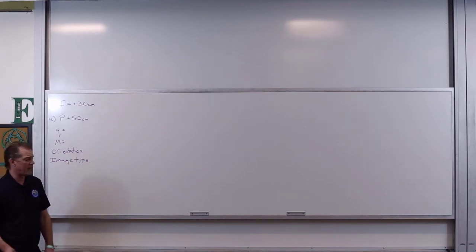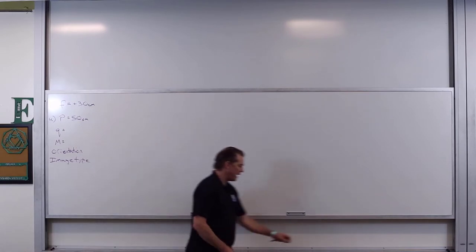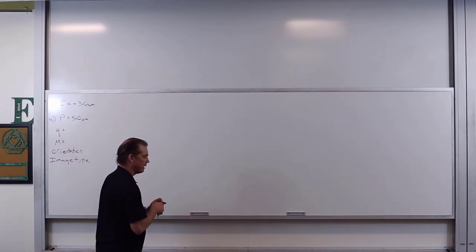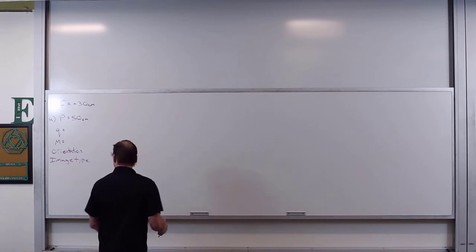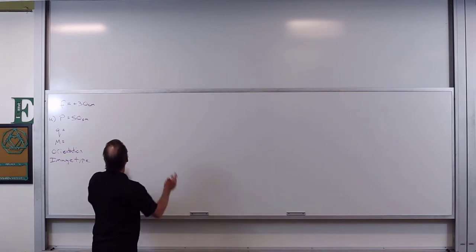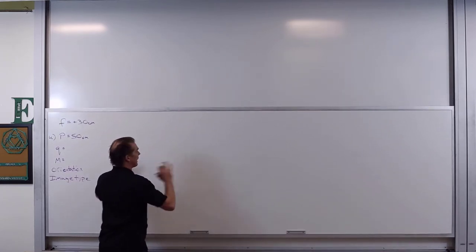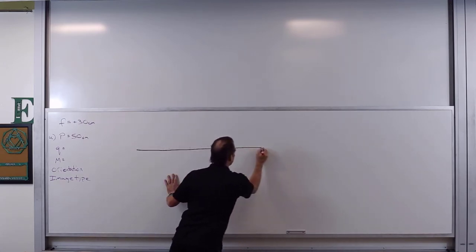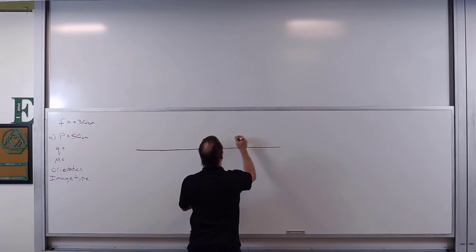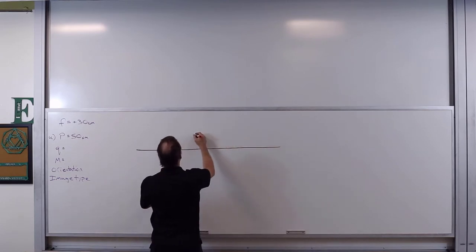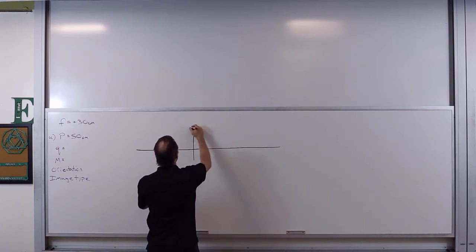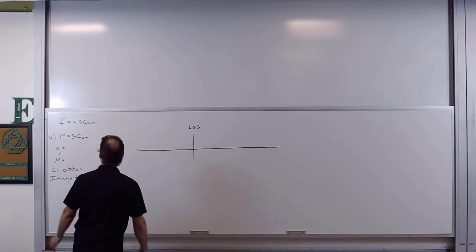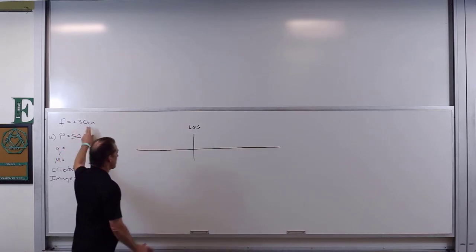It also asks us to produce a ray diagram, so we're going to do the ray diagram first and then see if our math matches. I'm going to freehand this. We start with our principal axis, and for the lens I can just put a straight line — here's our lens. Then we say our focal length is 30 centimeters, so I try to scale that out.